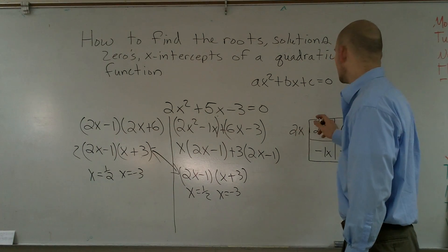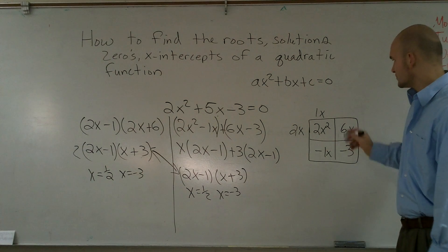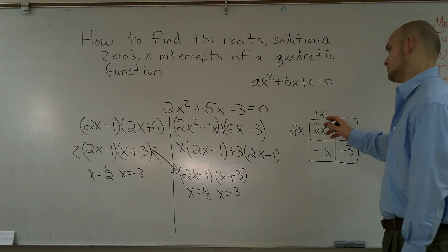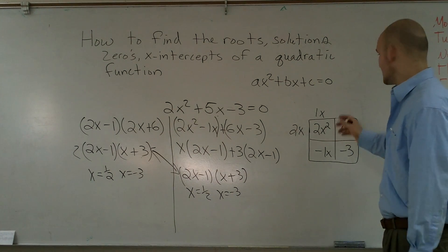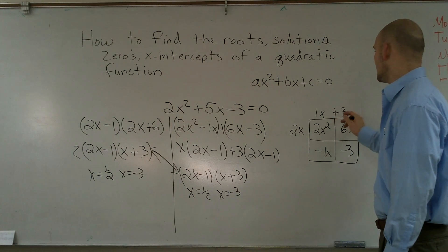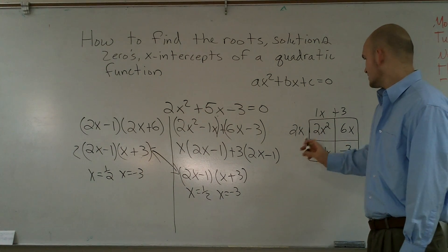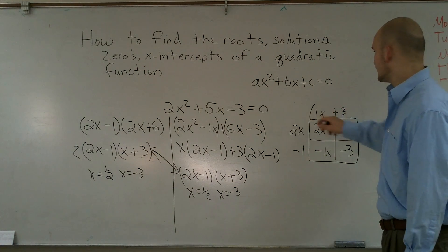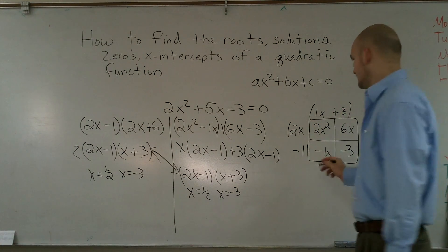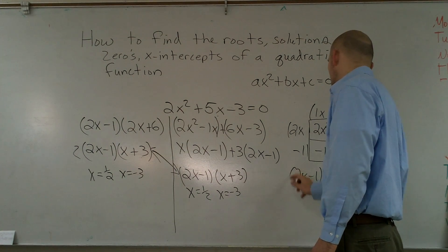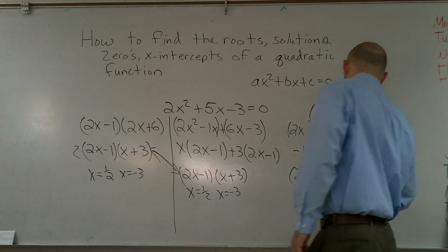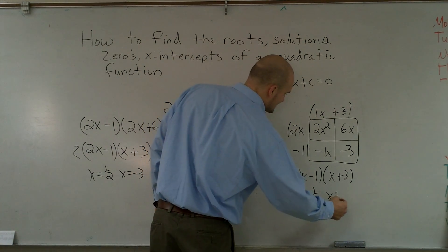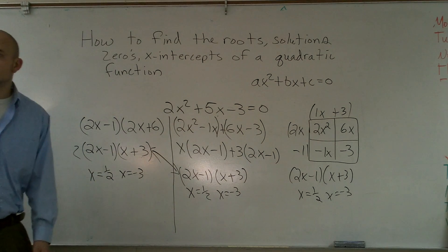So you say this is 2x, this is negative 1x. 2x times what gives you 6x? You say positive 3. And 1x times what gives you negative 1x? You say minus 1. Then you notice those again are the same factors: 2x minus 1 times x plus 3. So my answer is x equals one half, x equals negative 3. So there's three different ways you can finish off the problem.